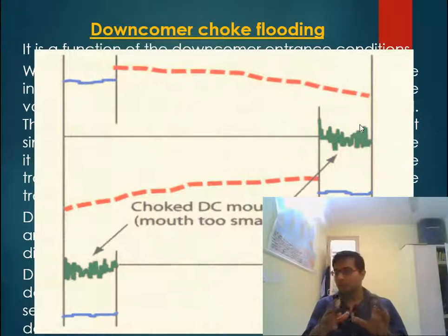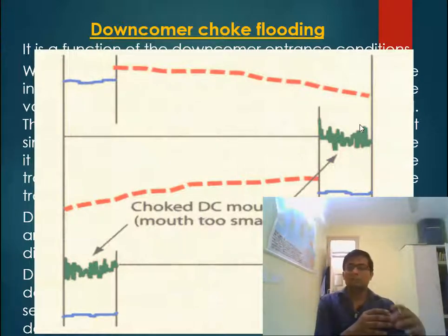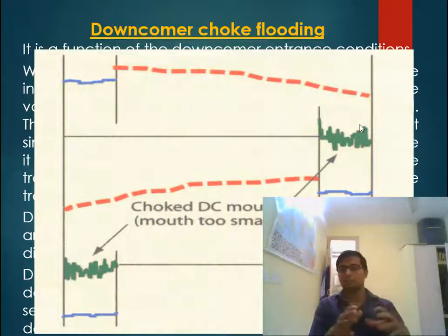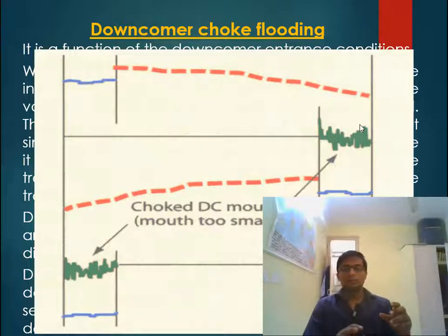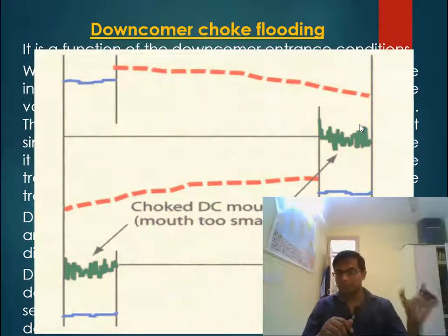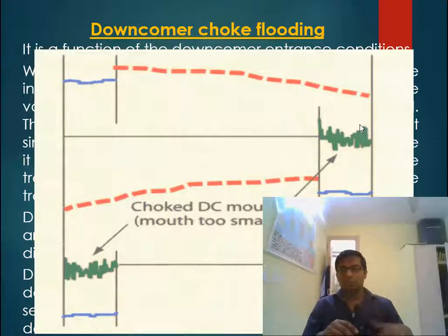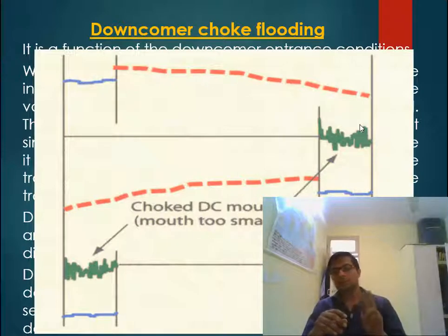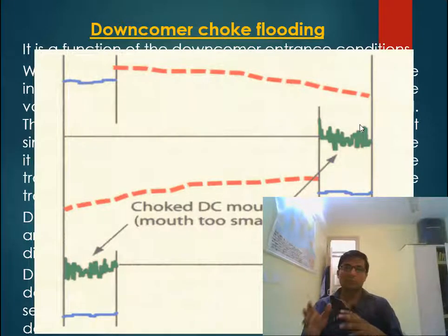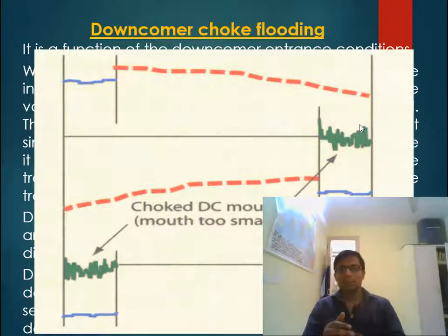In a well-designed column, downcomer choke flooding usually does not take place. Similarly, when tray spacing is sufficiently high, froth entrainment flooding usually does not occur. For this reason, many books define flooding as only two types: spray entrainment flooding and downcomer backup flooding (liquid flooding). Going forward, when we say entrainment flooding we mean spray entrainment flooding, and downcomer backup flooding means liquid flooding.